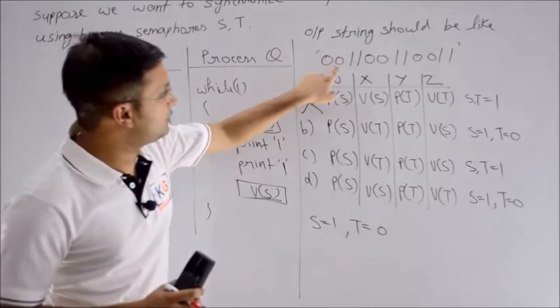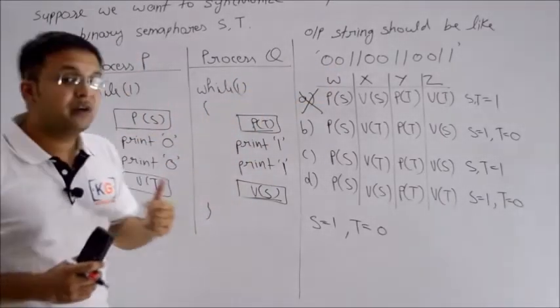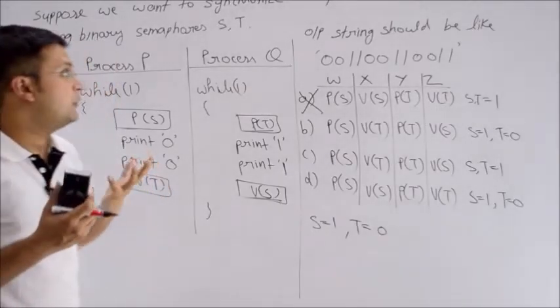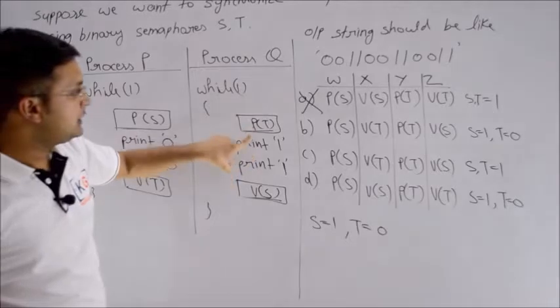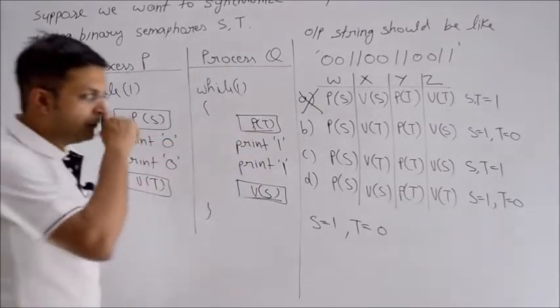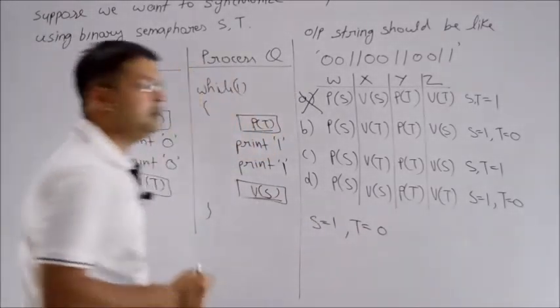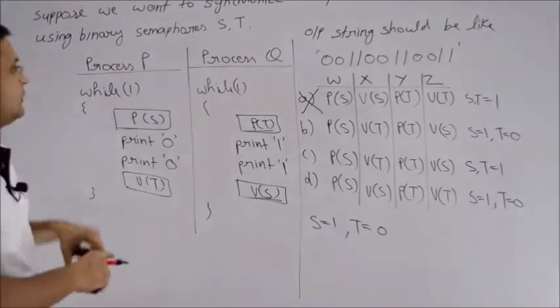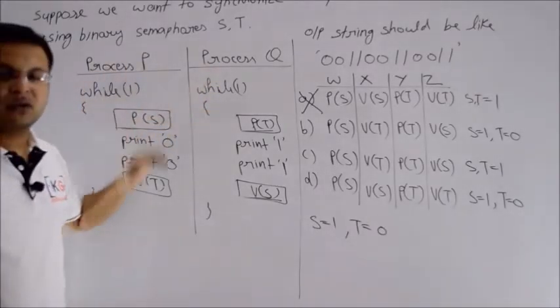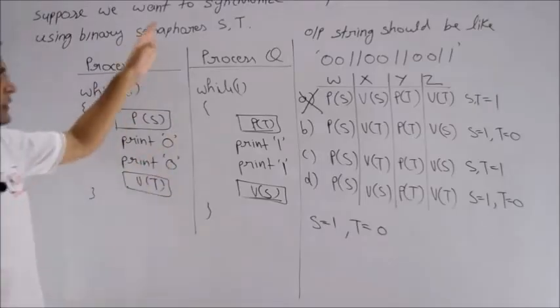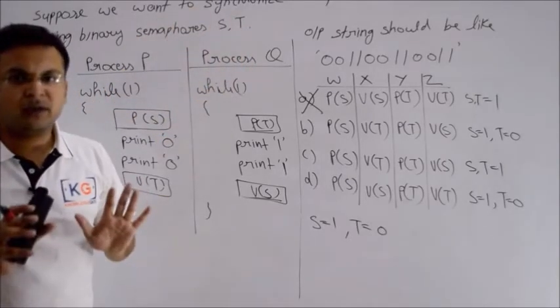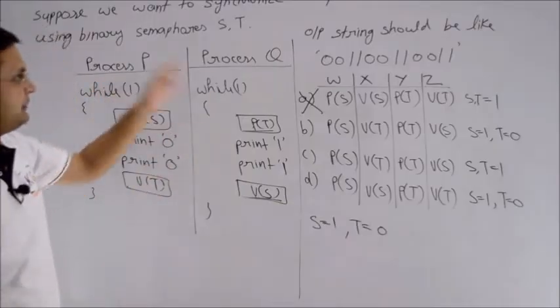It means you don't necessarily get only this pattern - some other pattern is also possible. For sure, option A is wrong. Now let me try option B. In option B, S should be initialized to 1 and T should be initialized to 0. The values are: P of S, but this time V of T, P of T, and V of S. Let me try this.